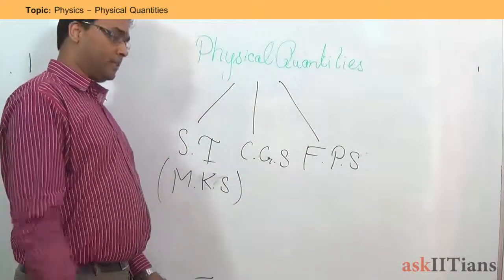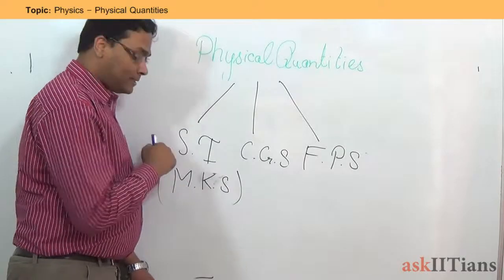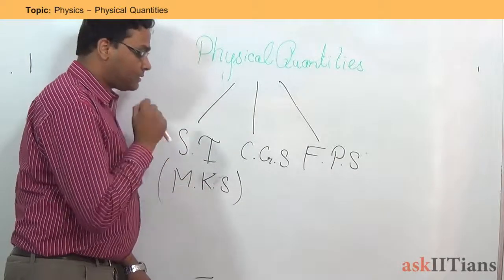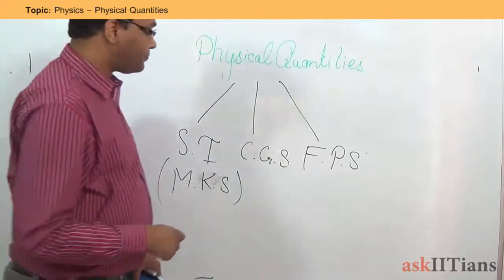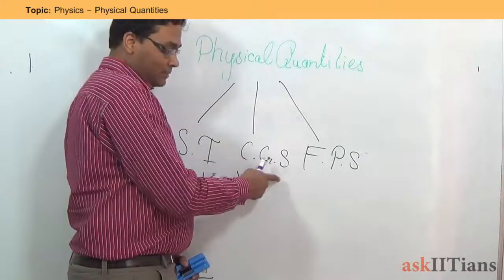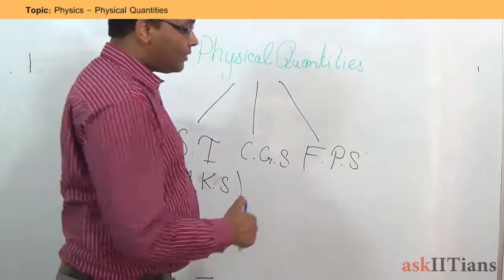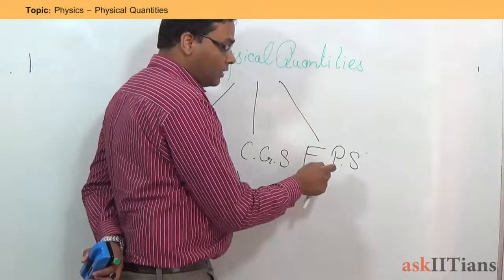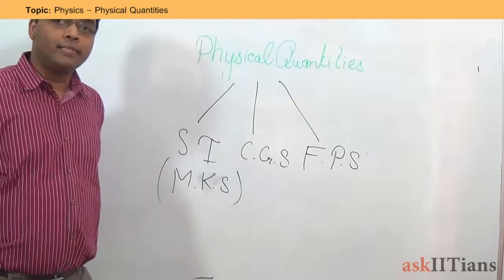In the SI or MKS system, both measure mass in kilograms, distance in meters, and time in seconds. In the CGS system, you measure distance in centimeters, mass in grams, and time in seconds. In the FPS system, you measure distance in feet, weight in pounds, and time in seconds. So these are the three systems of units that we have.